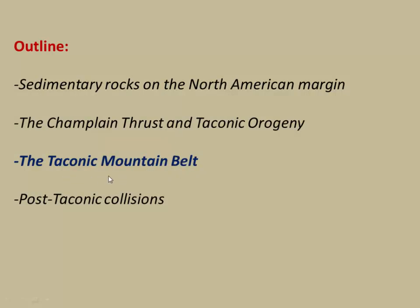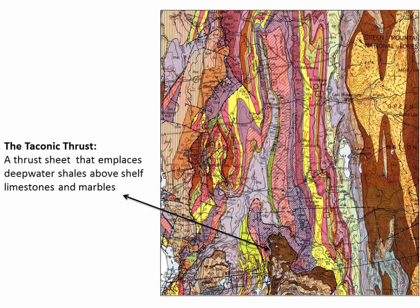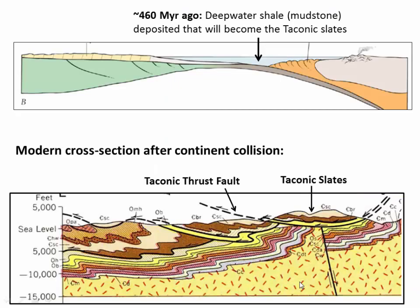Let's move a little bit south now and quickly talk about the Taconic mountain belt. We're up here in Middlebury — about 20 minutes south of us you start to hit the first Taconic thrust sheet, marked by this black line here. These brown rocks are the Taconic slate belt — rocks that were originally deposited as deep-water shales in the offshore around 460 million years ago.